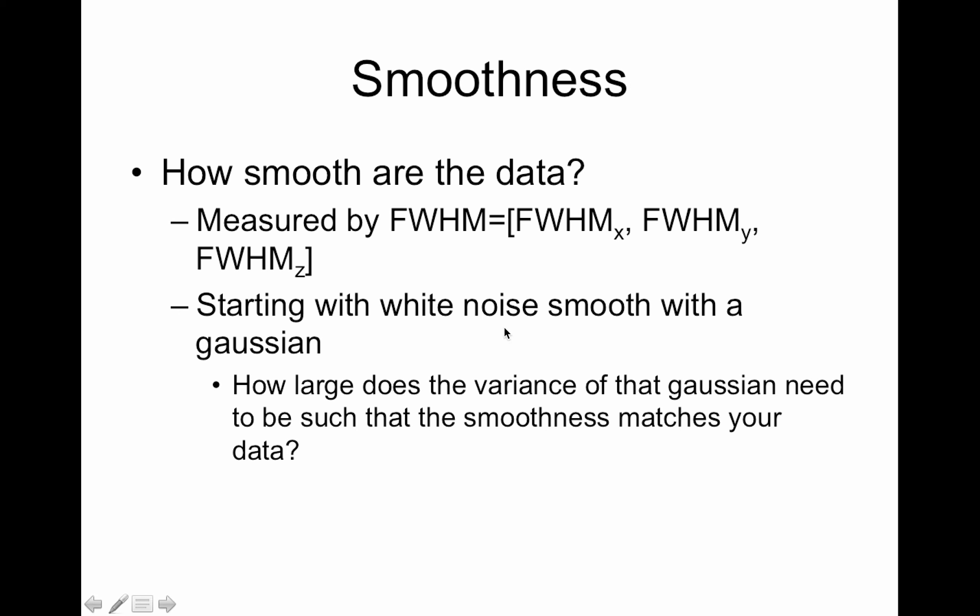So the idea is if you start with white noise, white noise is going to be really jagged. And you apply Gaussian smoother as we did to the data in the Bonferroni example last time. So if you want to see what it actually looks like to smooth data, you can go back to that code and the MATLAB code and look at it.